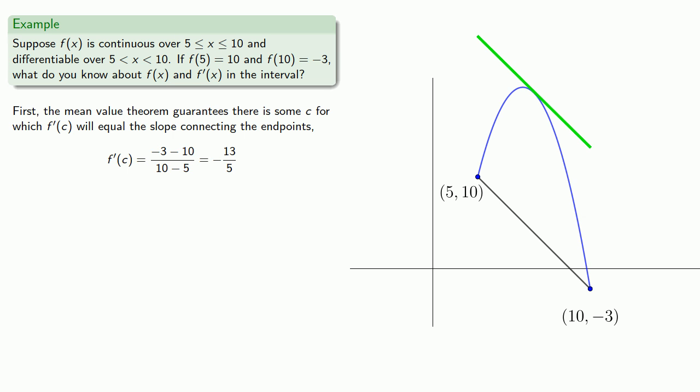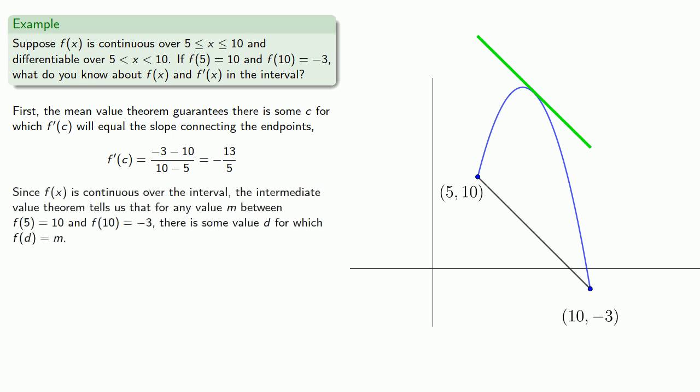But wait! There's more! We can find some more about this. We know that f of x is continuous over the interval. And so the intermediate value theorem tells us that for any value m between f of 5, 10, and f of 10, negative 3, there is some value d for which f of d is equal to m.